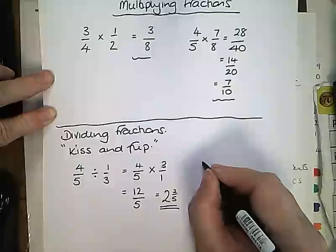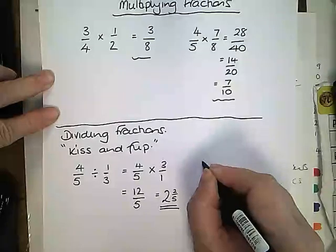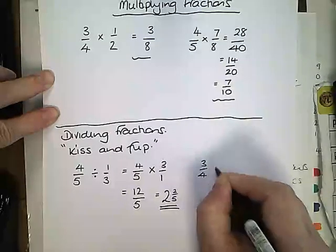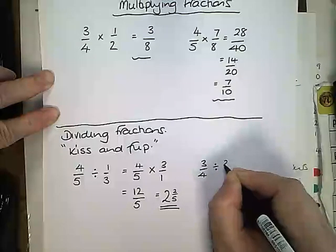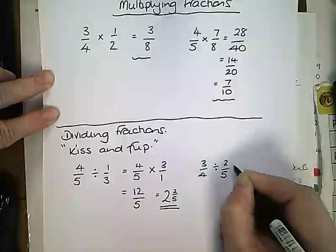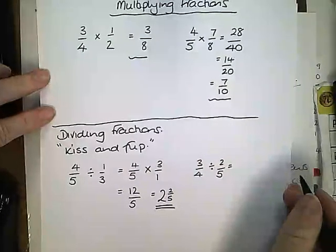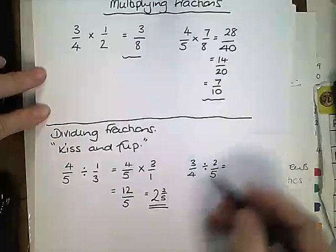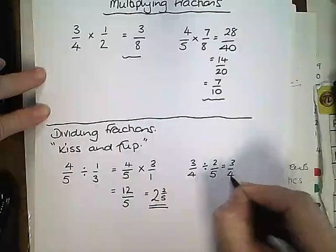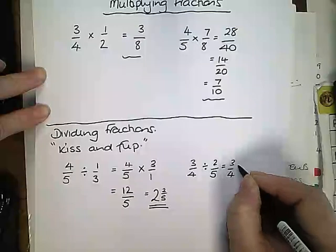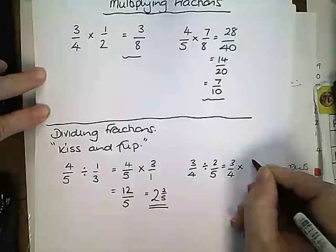If we have a question like 3 quarters divided by 2 fifths, we are going to kiss and flip. Keep the first fraction the same, so 3 quarters. Turn the divide into a kiss and flip the second fraction, 5 over 2.